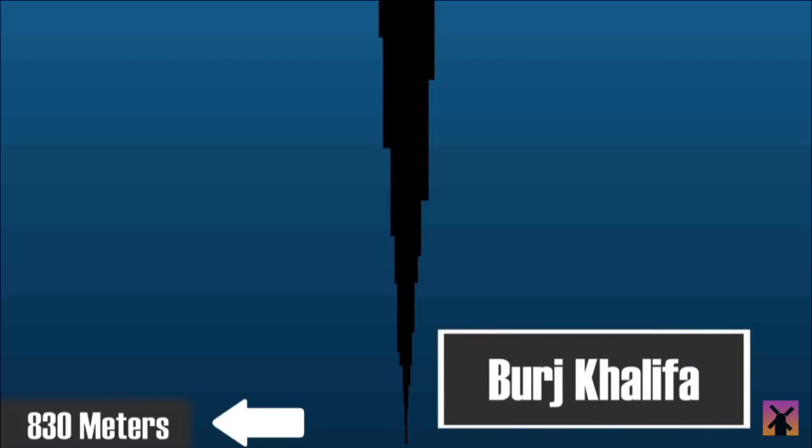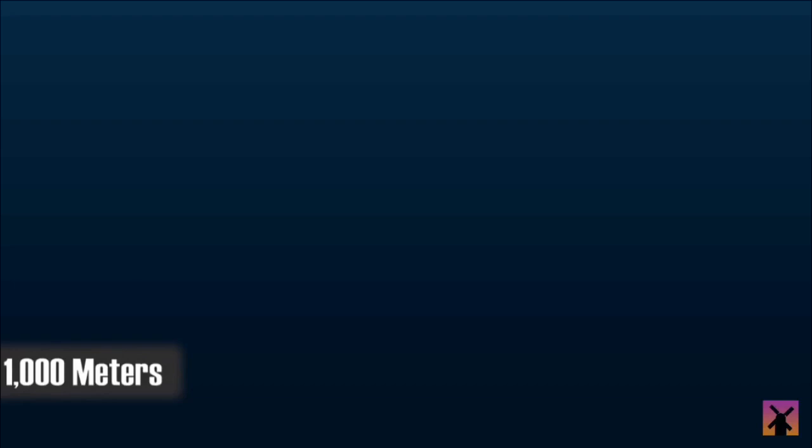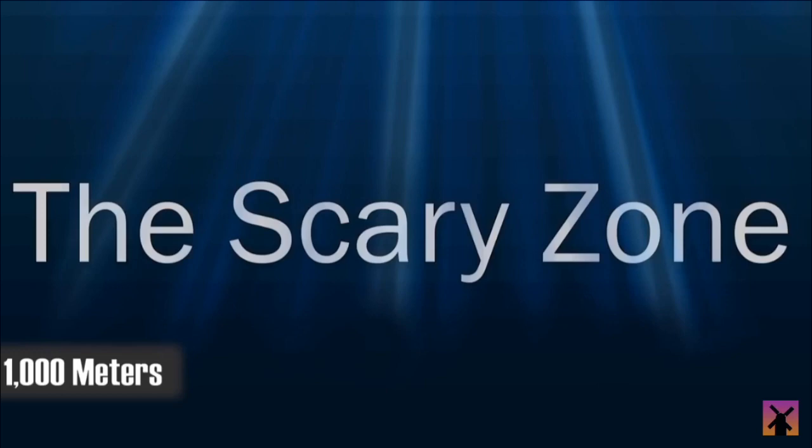Once we hit 1000 meters below the surface, we begin to enter the scary zone. Light from the surface can no longer reach beyond this point, so the rest of the ocean below is shrouded in permanent darkness. On top of that, the water pressure you would experience at this point would be about the same as if you were standing on the surface of the planet Venus, meaning that you would die very quickly.